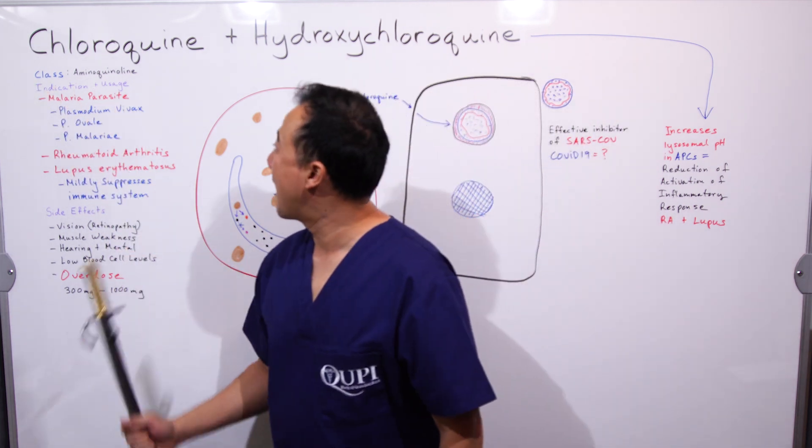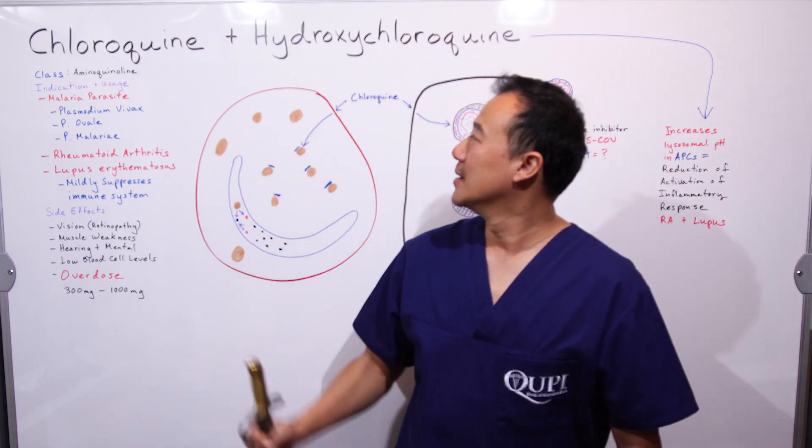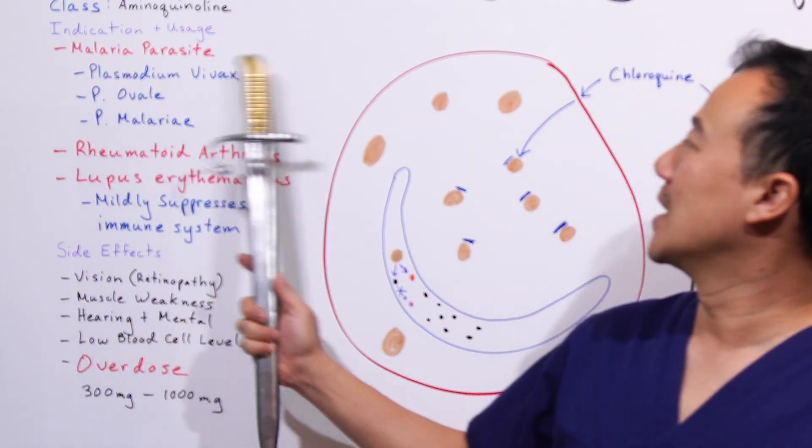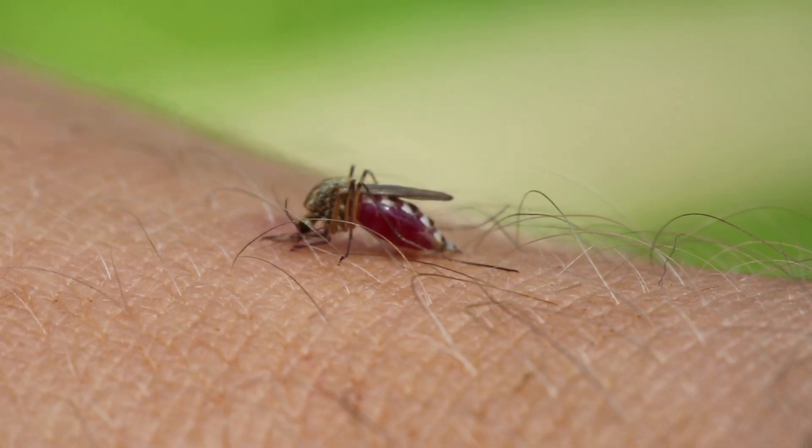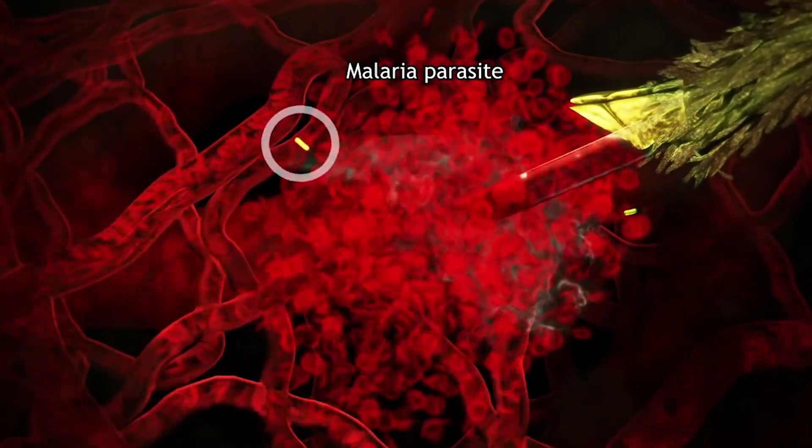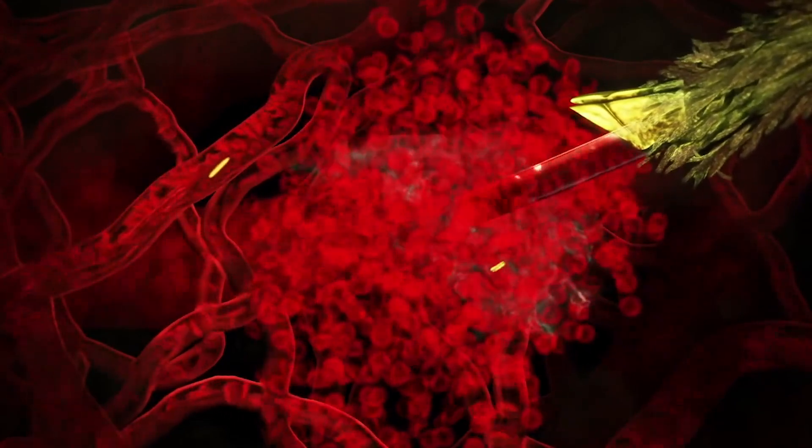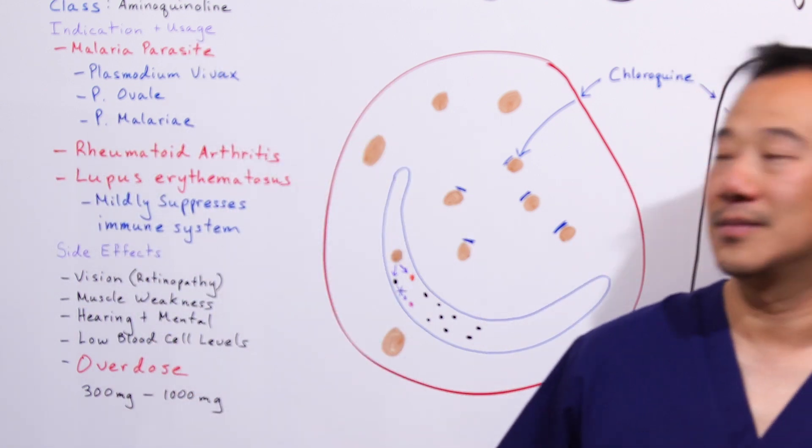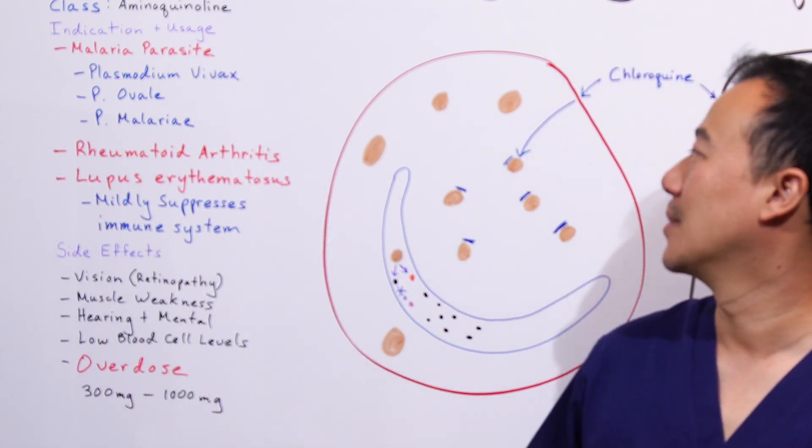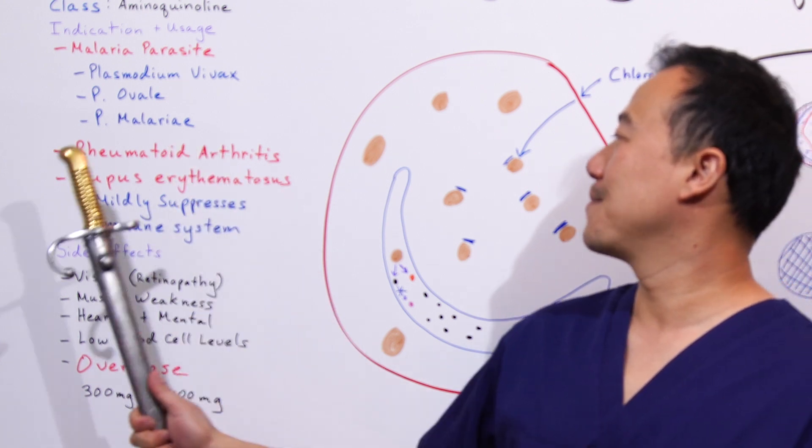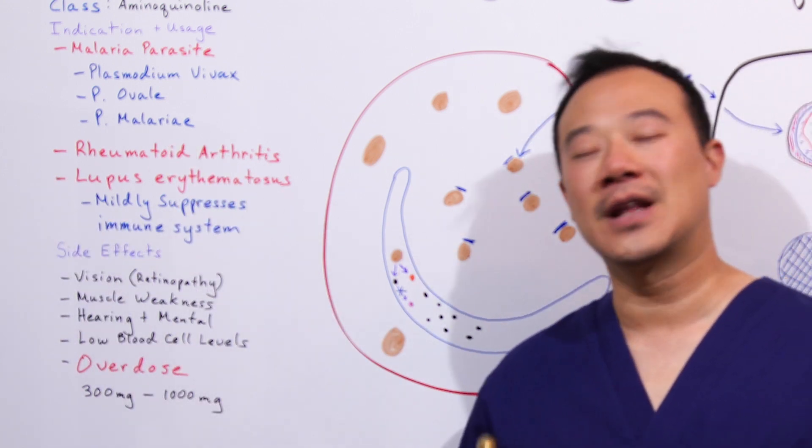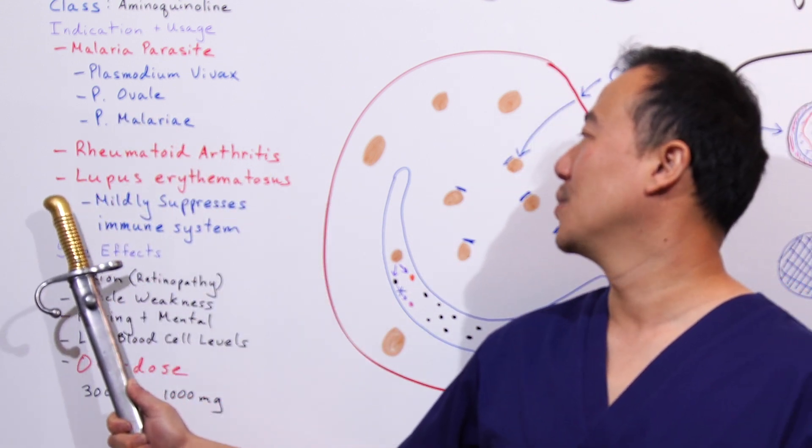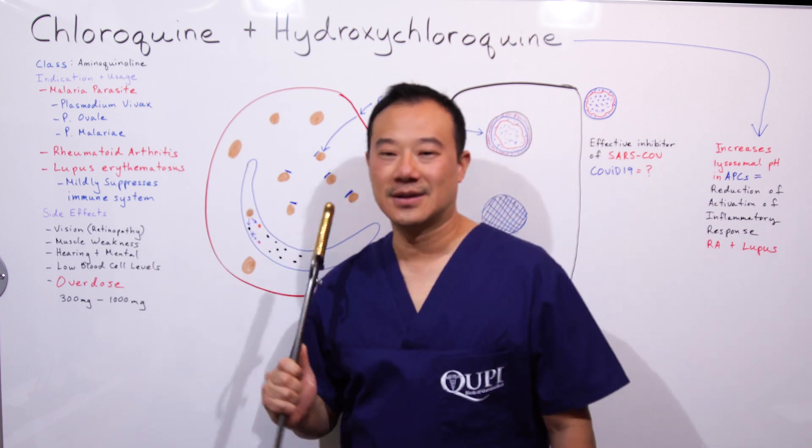Chloroquine is in a class of aminoquinoline. This class of drugs is indicated for malaria parasites, and it fights against these malaria species: Plasmodium vivax, P. ovale, and Plasmodium malariae.